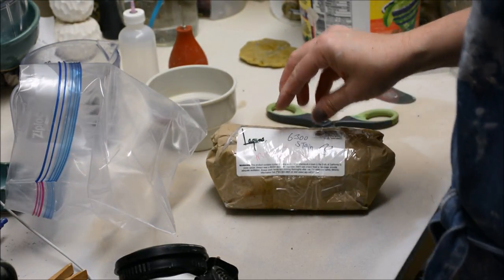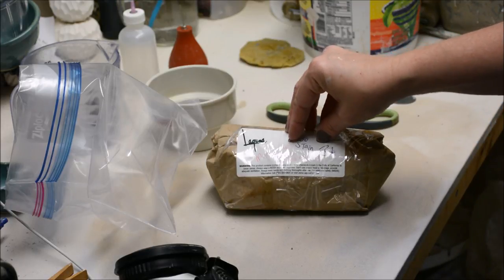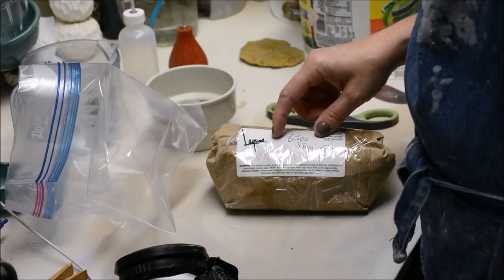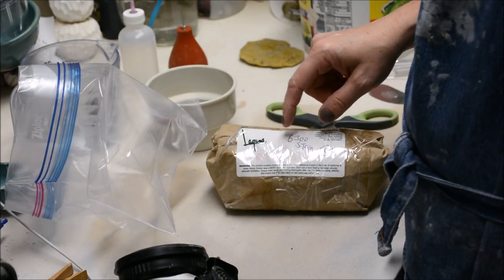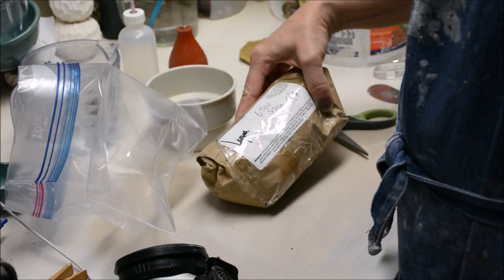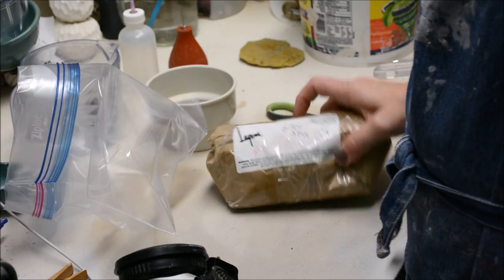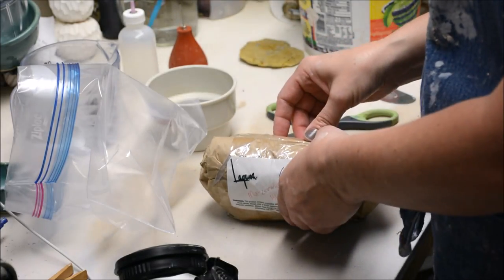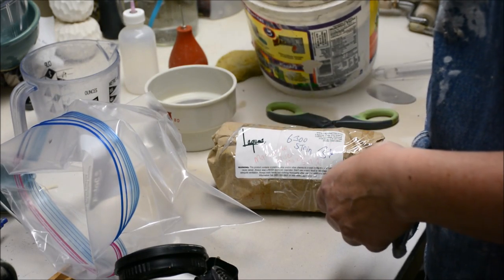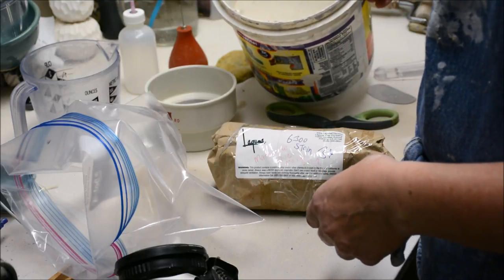There are mason stains that are sold as a body color. This is not one in particular. This is just a blue mason stain, it is 6300. I am going to be mixing it up in a Ziploc bag along with some slip. This is just my throwing slip.